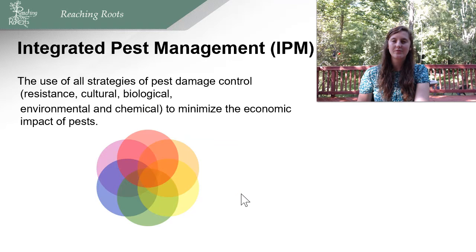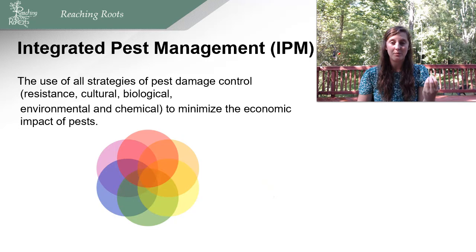Integrated pest management, or IPM, is the use of all pest damage control strategies — resistance, cultural, biological, environmental, and chemical — to minimize the economic impact of pests. Rather than using just one mode of control, we use multiple strategies to form an integrated system, reducing the likelihood of resistance developing in pest populations and managing in a more sustainable way.